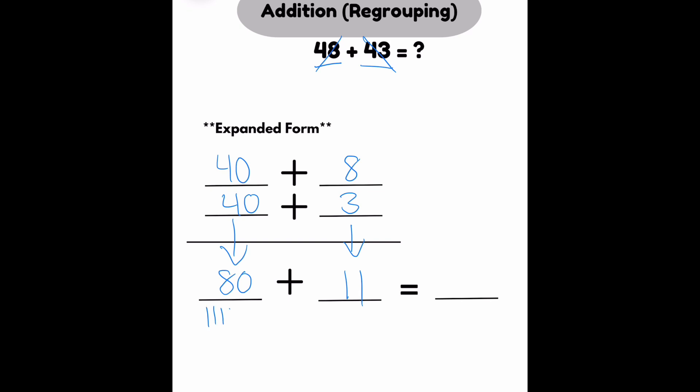Using base 10 blocks, I can have 8 tens and then 1 ten and 1 one over there. So looking at the 10s, I have 1 ten over here and 8 over here. That means I have 9 tens. And then if you look, this is the only 1. So I have 91.